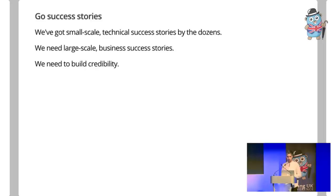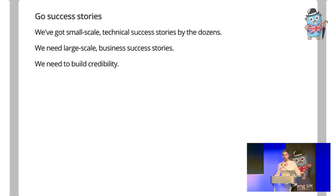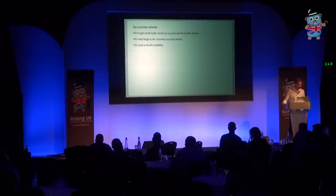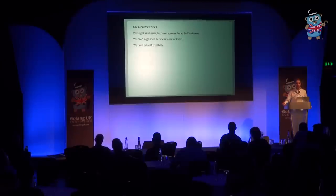What Go already has is a lot of small-scale technical success stories — blog articles saying 'we rewrote our API in Go and saw a 10x drop in resource usage and a 10x improvement in latency.' But we've got a lot of those now. What we need at this next stage of growth are larger-scale business success stories. I want to see companies say 'we switched to Go and as a result raised a $100 million Series C' or went from unprofitable to profitable. That credibility is what Go needs to capture attention.